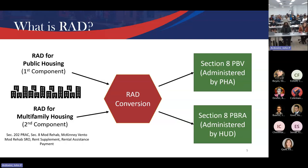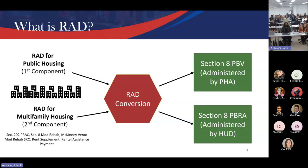We retired the rent supplement and rental assistance contracts — those conversions went away in 2019. We're also looking to bring in the Section 811 program, which is homes for persons with disabilities. Donna's team has about 30,000 PRAC units, about 10,000 moderate rehab units, 5,000-plus SROs, and counting. Those properties can also convert to Section 8 PBRA administered by HUD or by housing authorities.